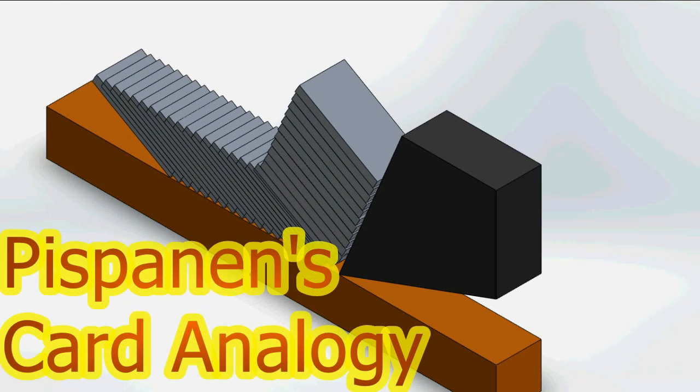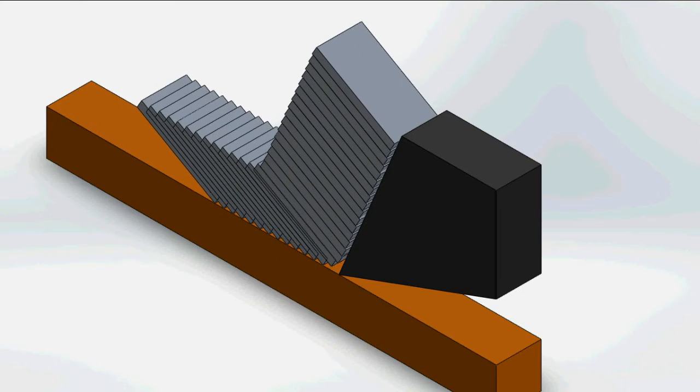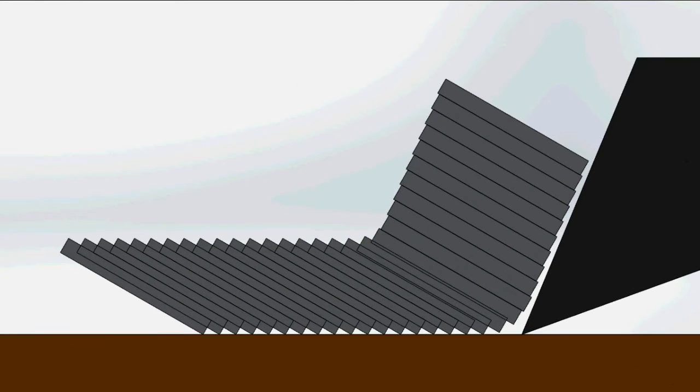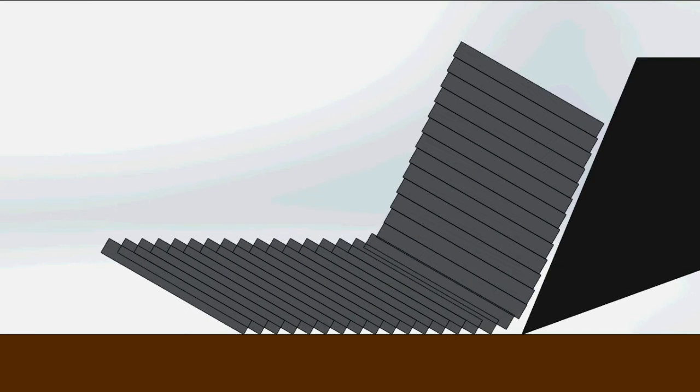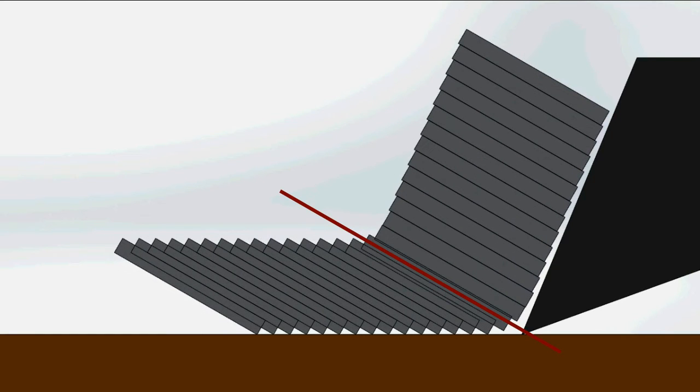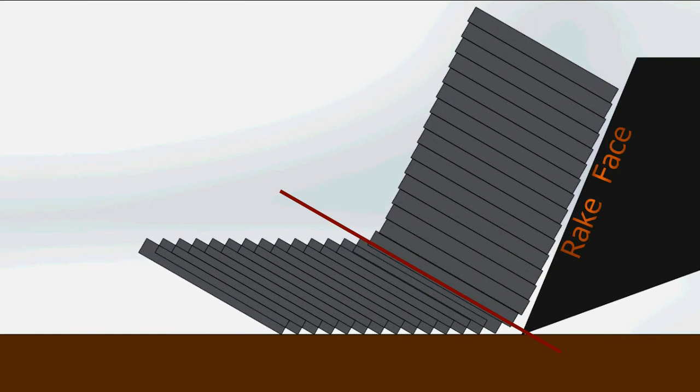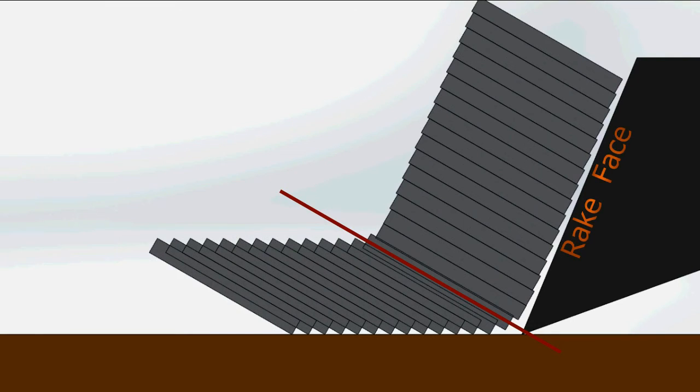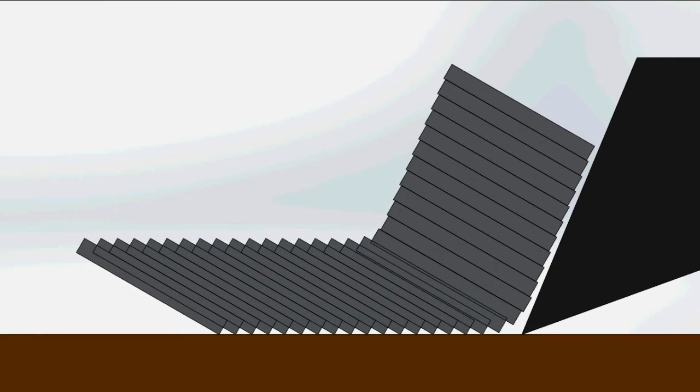The mechanism of chip formation can be shown by Pispannon's card analogy. Assume this is a bunch of playing cards. As the tool advances, the cards will slide against each other here and move upwards along the tool's rake face. As a result, the thickness changes from here to here.